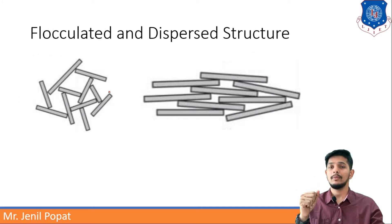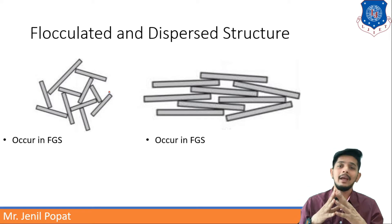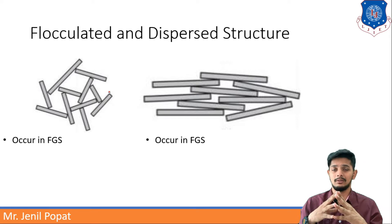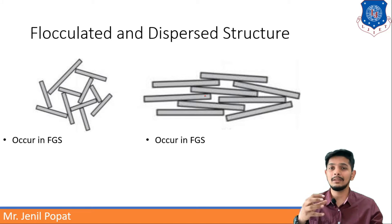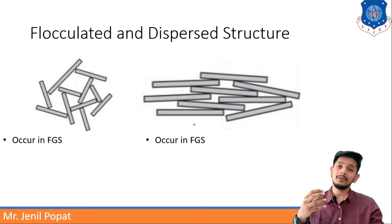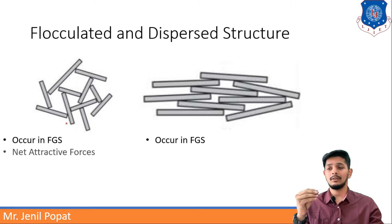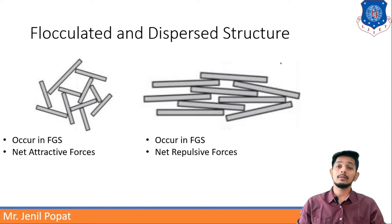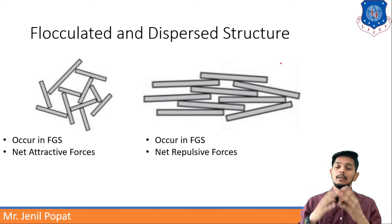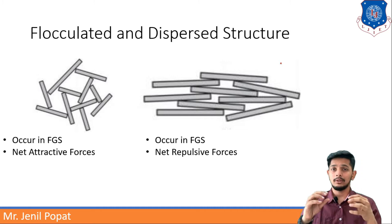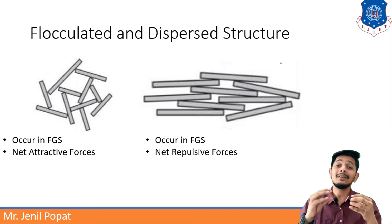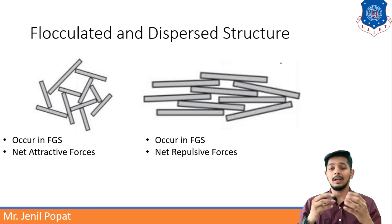Flocculated and dispersed structure — you can see two images here. In flocculated structures, soil particles are joined together roughly. In dispersed structure, they are arranged more systematically. Both structures occur in fine grained soils, meaning clay and silt. Flocculated structures are generally having net attractive forces — the net forces of the soil particles are attractive ones. Whereas in dispersed structure, these are repulsive forces.